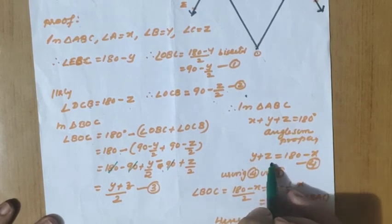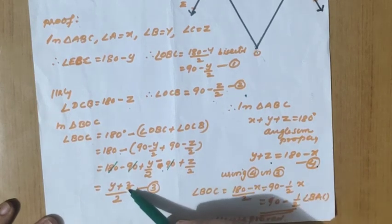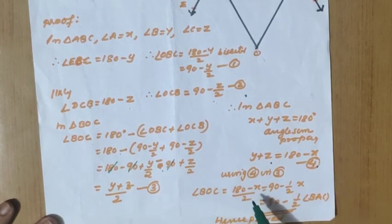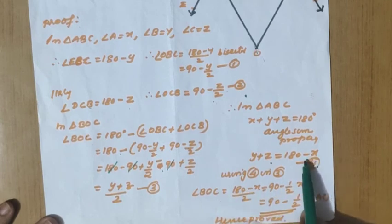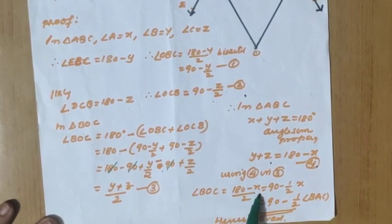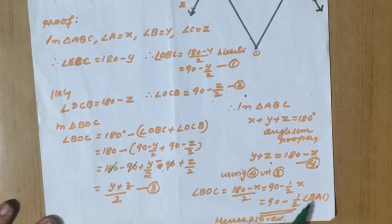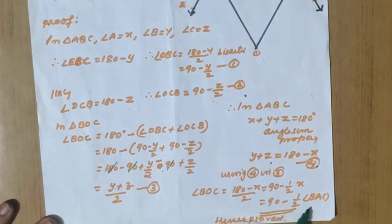Substituting equation 4 into equation 3: angle BOC equals 180 minus x divided by 2, which equals 90 minus x by 2. Since we assumed angle A equals x, this becomes 90 minus half of angle BAC. Hence proved.